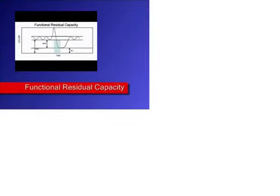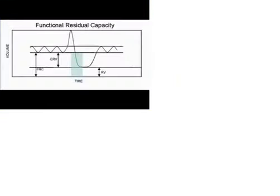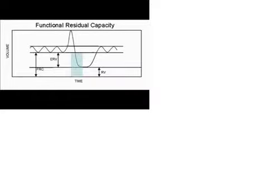The functional residual capacity is the amount of gas remaining in the lungs after a tidal expiration. It includes the expiratory reserve volume and the residual volume. Normally, it is 40% of the total lung capacity. The FRC cannot be measured with spirometry because the RV cannot be exhaled and therefore cannot be measured directly. The FRC has to be measured indirectly using helium dilution, nitrogen washout, or body plethysmography.